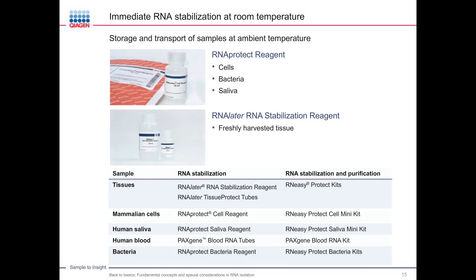The goal of stabilization is to stop induction of any RNA transcription, prevent downregulation, and prevent unspecific degradation of RNA. There are agents that bind directly to nucleic acids, agents that lyse cells, and agents that inhibit, denature, or precipitate nucleases. QIAGEN provides a variety of stabilization reagents depending on different sample types, as shown in the table — covering different sample types, different sample stabilization options, and simultaneous sample stabilization and purification kits.